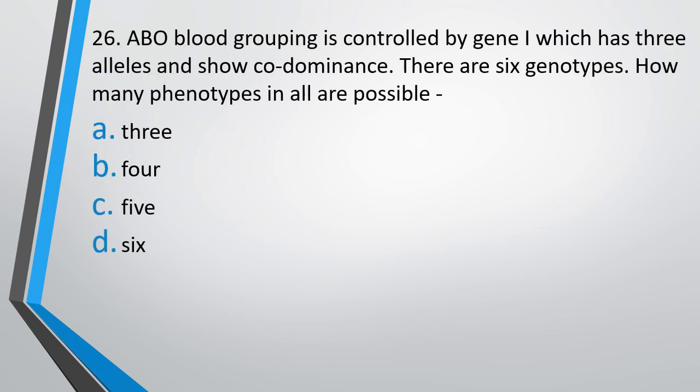Question number 26: The ABO blood grouping is controlled by gene I, which has three alleles and shows co-dominance. There are six genotypes — how many phenotypes are possible? The correct answer is option B: four phenotypes, and those are A, B, AB, and O.